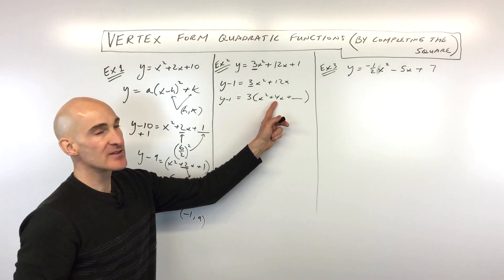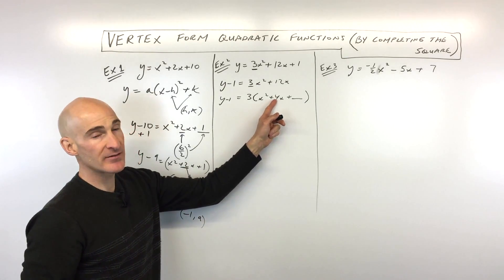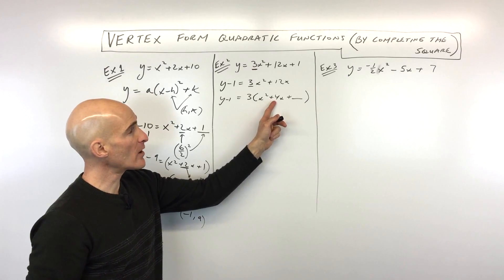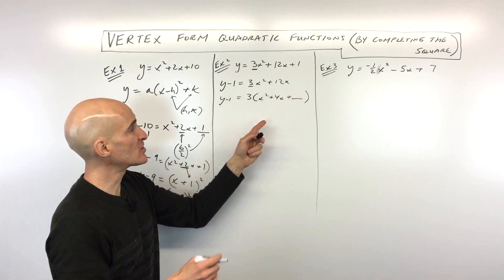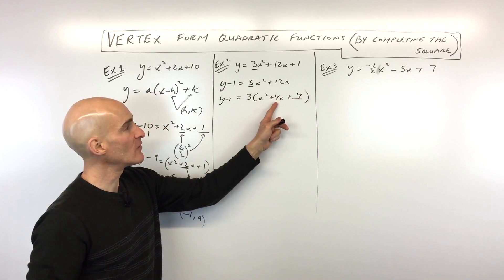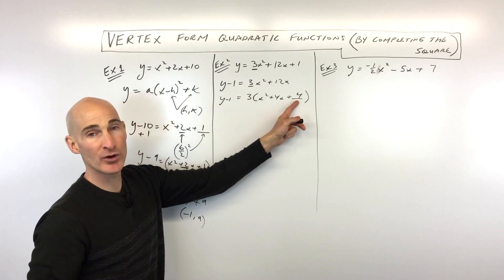Now what we want to do is we want to take half of this number in front of the x, half of this middle coefficient. So half of 4 is 2. And then we square that, which is 4. Now it just happens to be a coincidence that this is 4 and that's 4. But you take half the middle coefficient, whatever that is, you square that and you put it there.